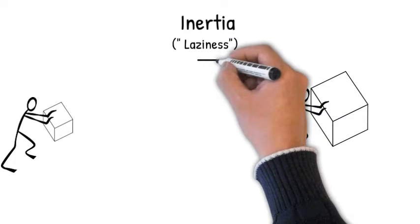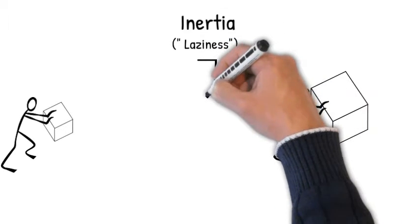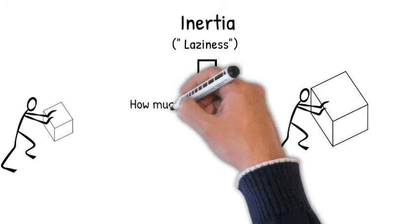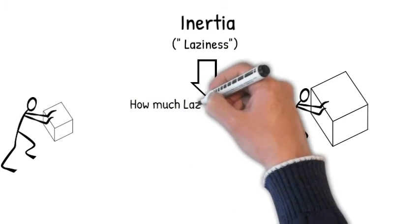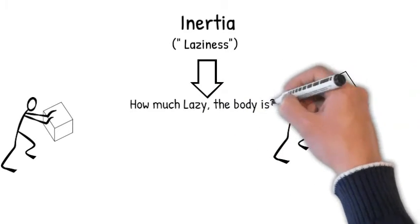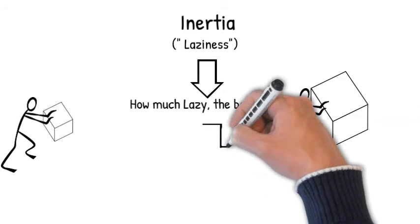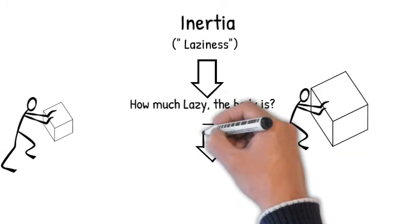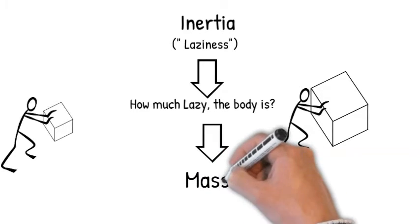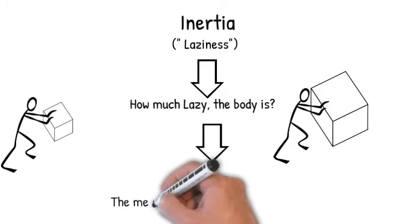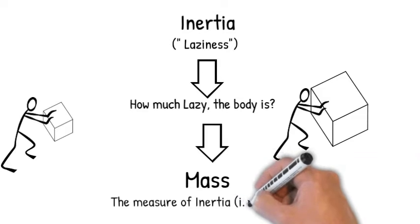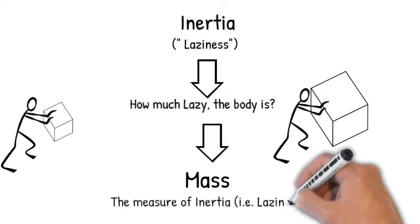The person finds that the laziness or tendency to remain unchanged is different for different cubes. So the laziness of two cubes is different. How to distinguish the laziness of each body from one another? This can be done through mass. Mass is the measure of inertia or laziness.